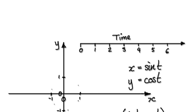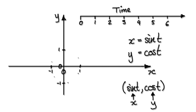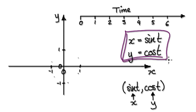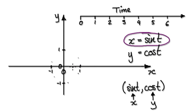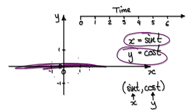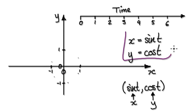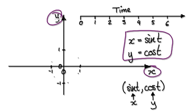Now we're going to move on to parametric equations. With parametric equations, you'll be given something like this, and from this you can draw your curve. This bit here represents the x direction, and this bit here represents the y direction. Combine these two and it will give you the exact location on the xy plane.